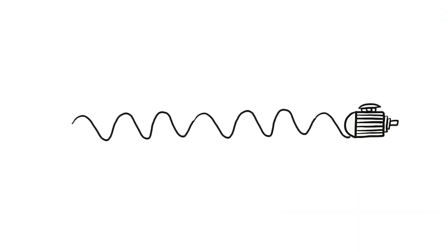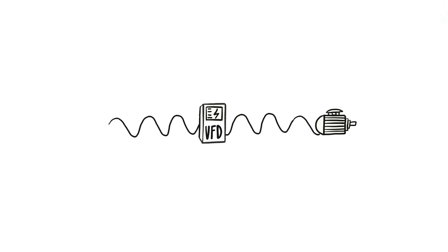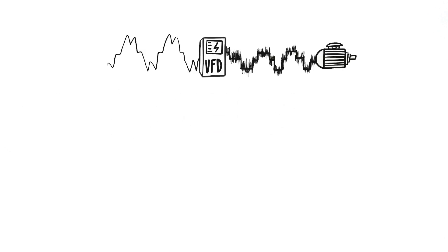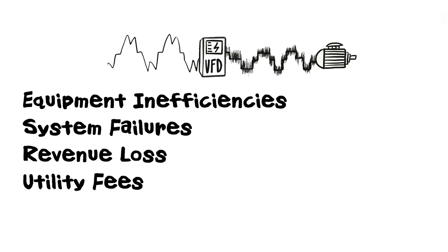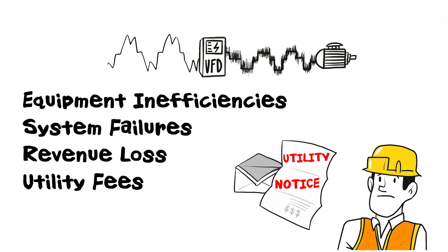We rely on clean power, free of harmonic distortion to effectively power our equipment. Otherwise, we're risking equipment inefficiencies, system failures, downtime and lost revenue, or even shutting down your facility because of added harmonics back to the grid.